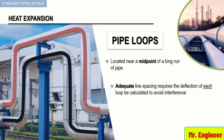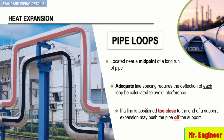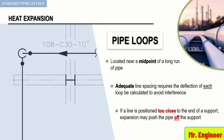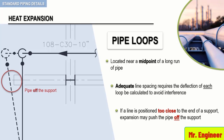For now, keep in mind that lines resting on T-supports must be designed carefully as well. If a line is positioned too close to the end of a support, expansion may push the pipe off the support. In this example, line 108 is placed on a T-support and, as you can see, it is too close to the end of the support. As the pipe grows following the thermal expansion, it will be pushed off the support. This could potentially lead to a serious safety issue.